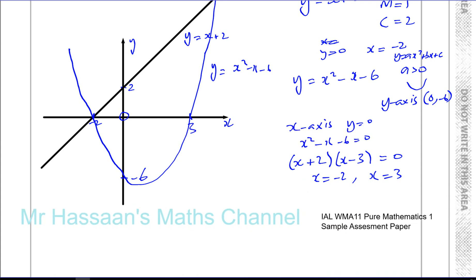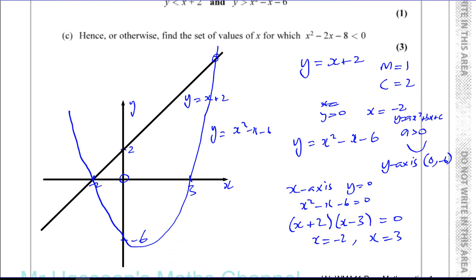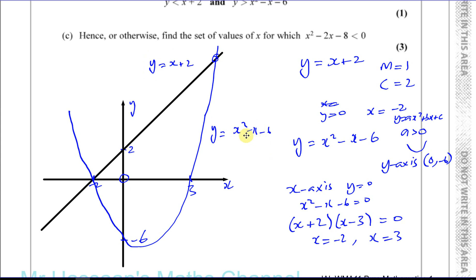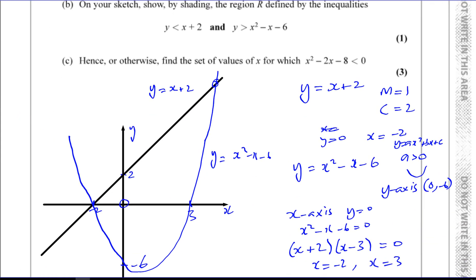So we know that the quadratic crosses at minus 2 and 3 on the x-axis, and at minus 6 on the y-axis. The line crosses at 2 on the y-axis and minus 2 on the x-axis. Let's label the line and the curve. So we've got the sketch with everything there.